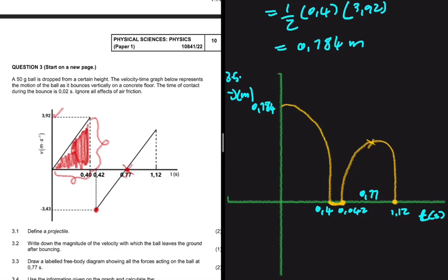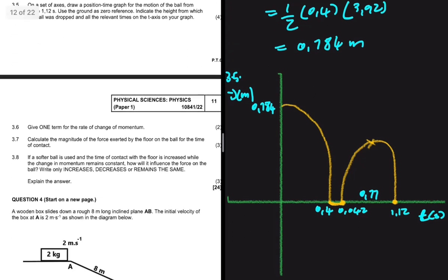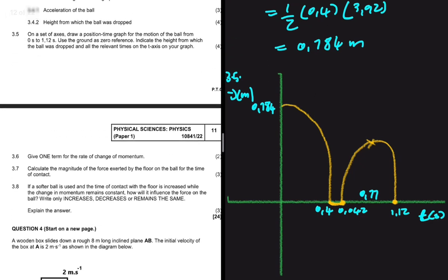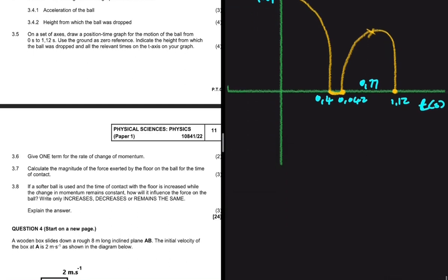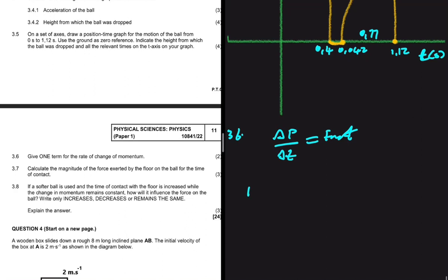For 3.6, give one term for the rate of change of momentum. The rate of change of momentum is Δp ÷ Δt, which we know equals Fnet. The one term we should give is 'net force' — or at least 'resultant force'.